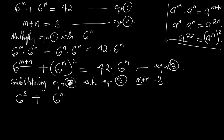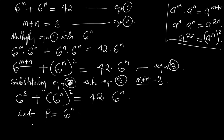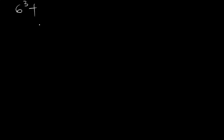Now let P equal 6 raised to power m. So anywhere we see 6 raised to power m, we replace it with P. We now have 6 raised to power 3 plus P, all squared, equal to 42 times P. Since 6 raised to power 3 is 216, expanding gives us P squared plus 216 equal to 42P.